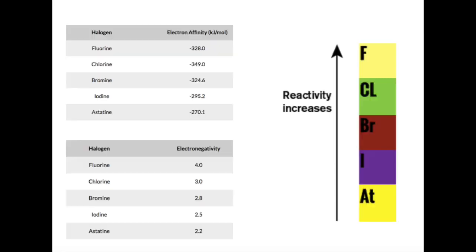Electron affinity is another periodic trend, as it decreases when it goes down the group. This trend appears because the atomic size increases, meaning that the electron affinity usually decreases. This is represented with the above table.